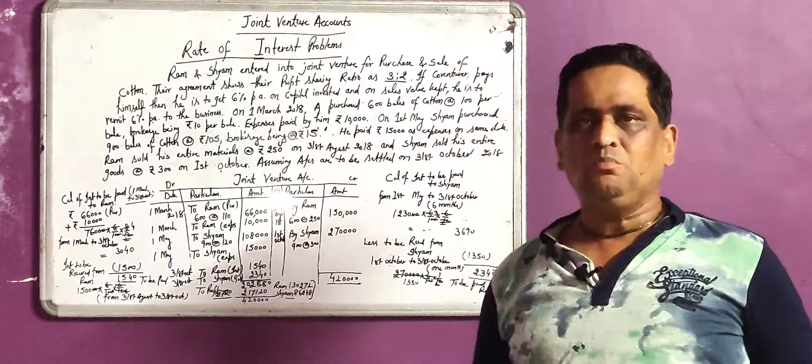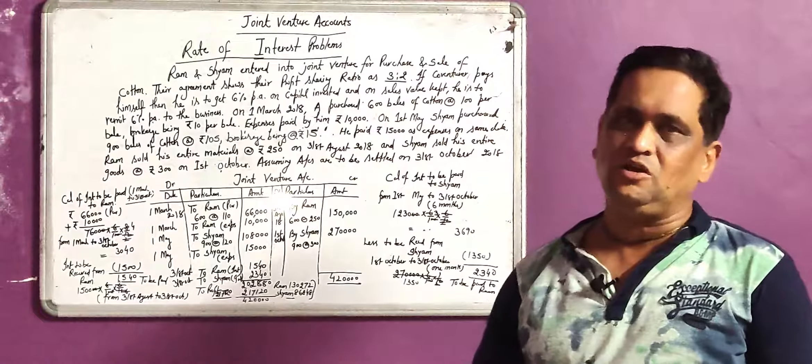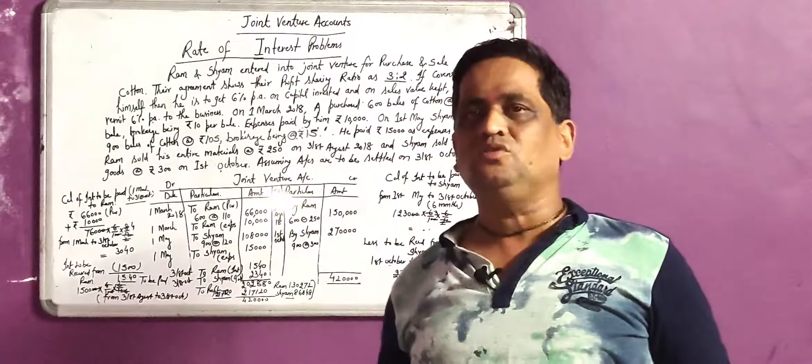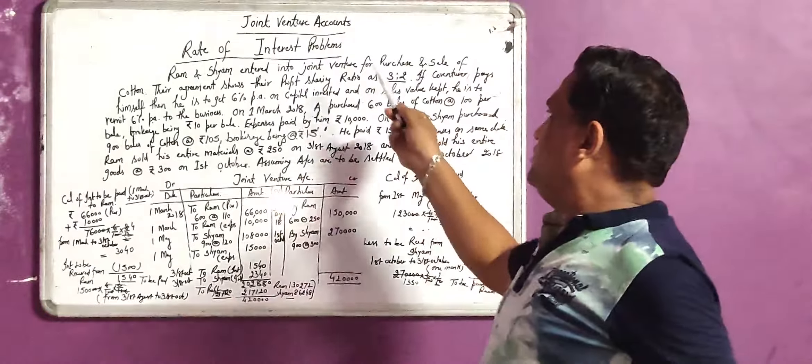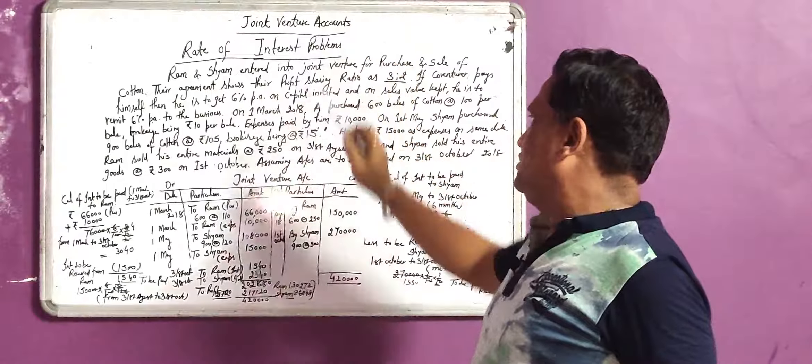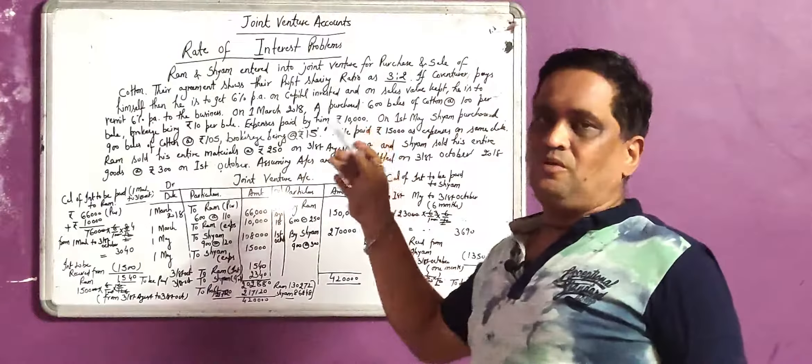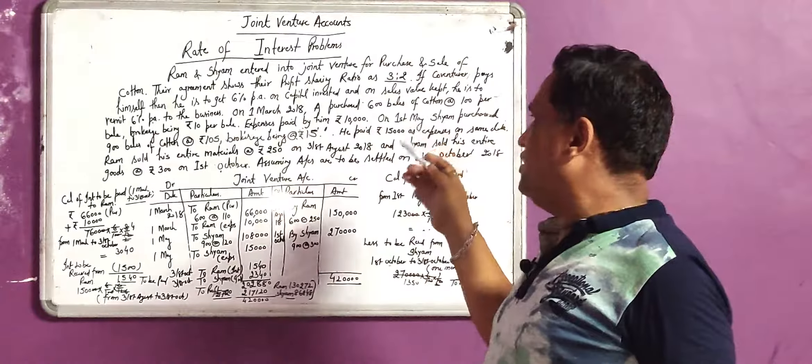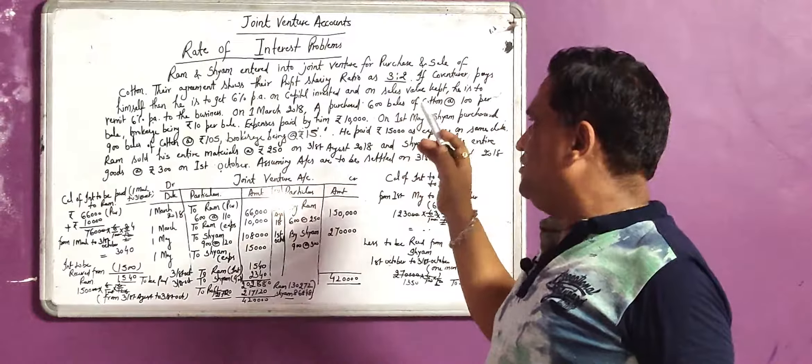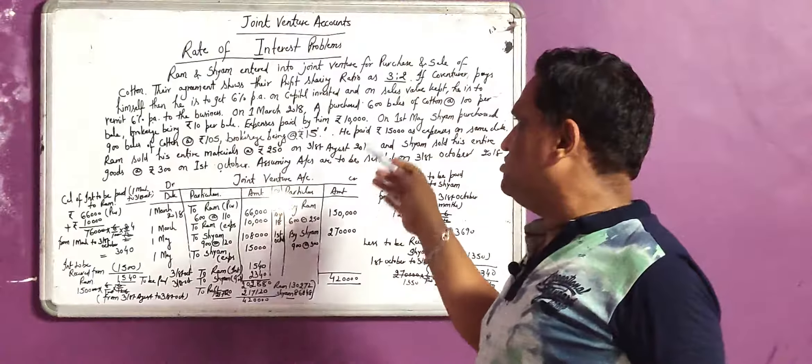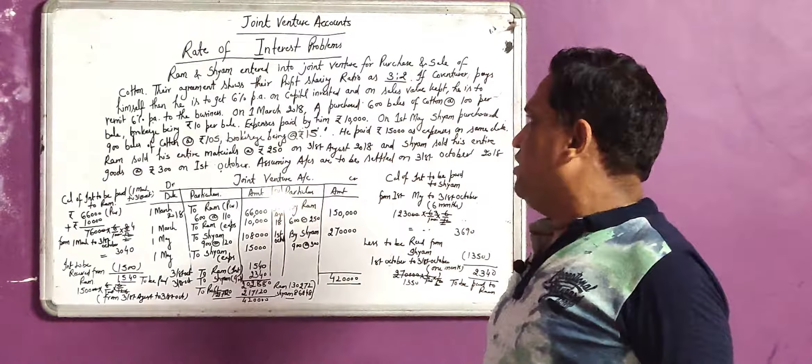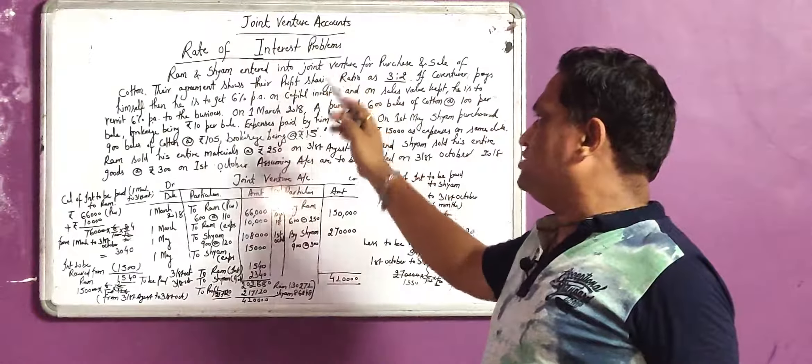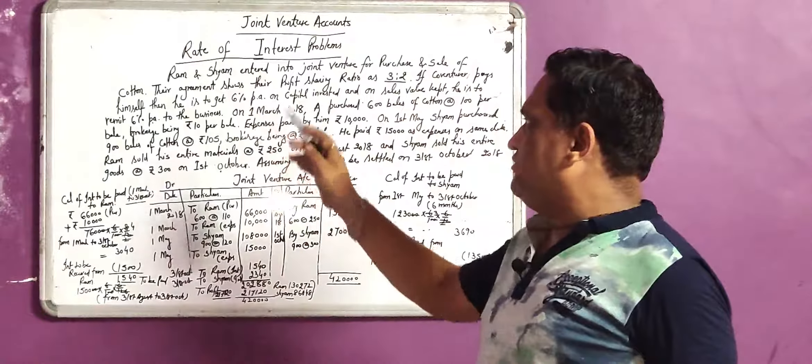Welcome again to the most specialist channel of commerce, and we can say the most intelligent channel of commerce. We are now dealing with joint venture accounts and it is now the interest problem. In this case we are dealing with the interest problem in our illustration.